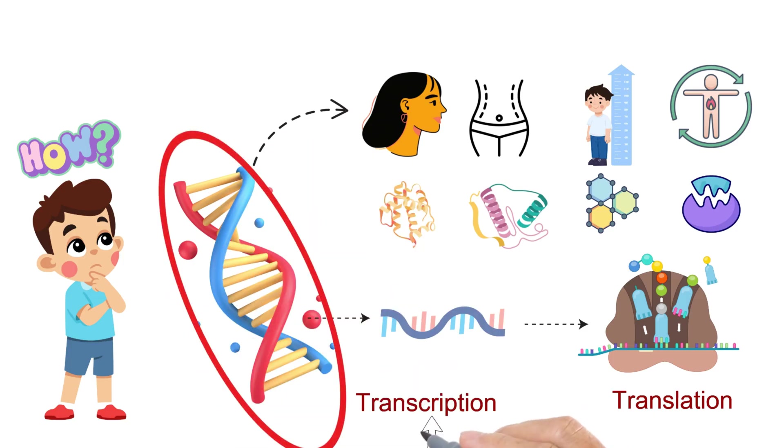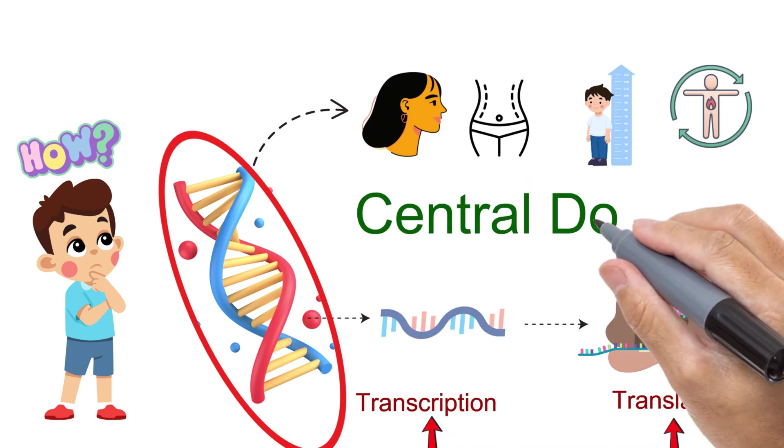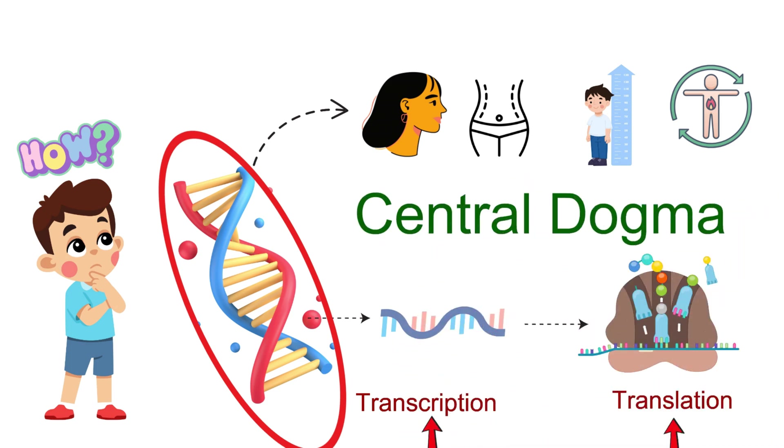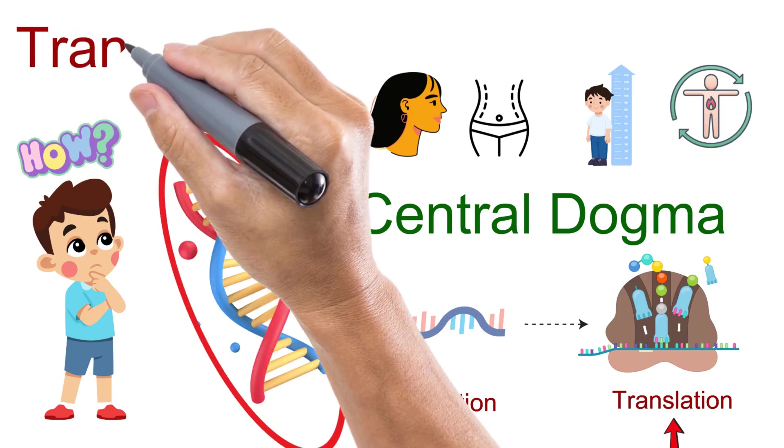...and translation brings those instructions to life, one protein at a time. When we put all of this together—DNA making RNA and RNA making proteins—the entire flow of information is called the central dogma of molecular biology. It's the guiding principle that explains how your genetic code becomes you. So let's dive into the first step: transcription.